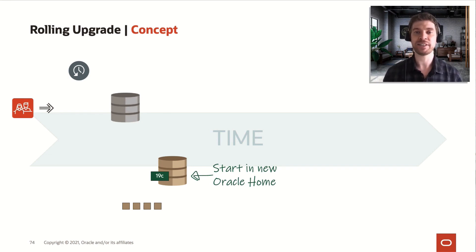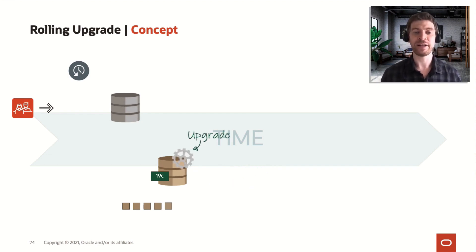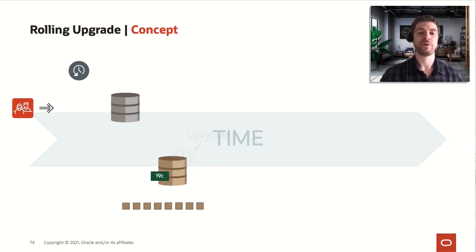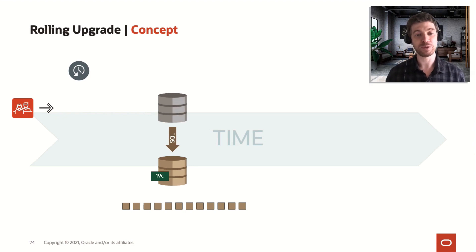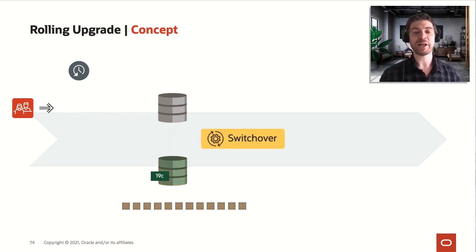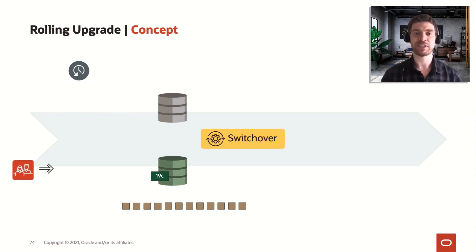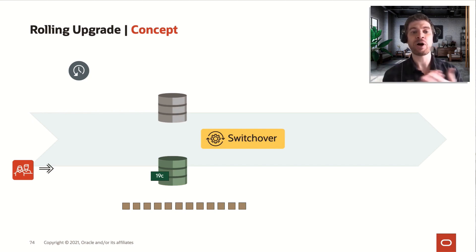We will start the database in a new Oracle Home and upgrade it. All that process will also be creating new redo log files, as you can see here. Now that we have the logical standby database upgraded to 19c, we have what we call a mixed Oracle version with Data Guard redo transport services — our primary database is shipping redo to the logical standby database. Next, we perform a switchover. This is the only downtime we have during this process: client connections that were on the primary database will now connect on the new primary, which is our 19c database.